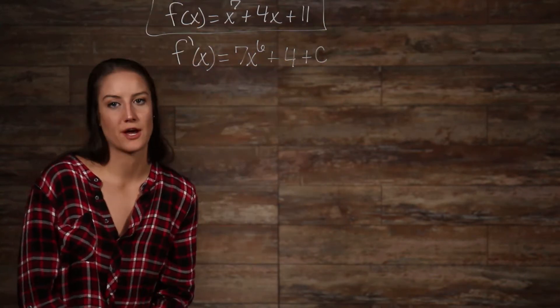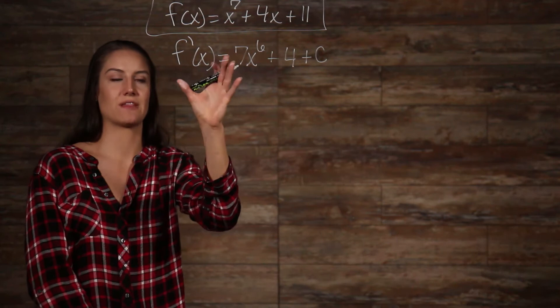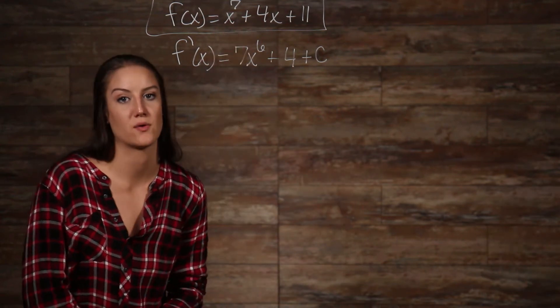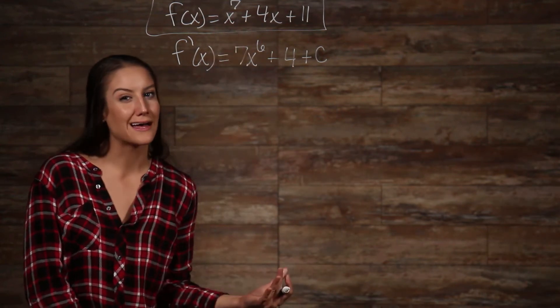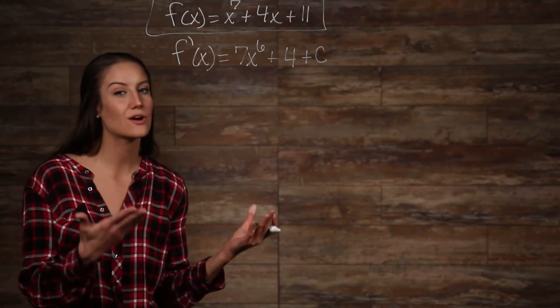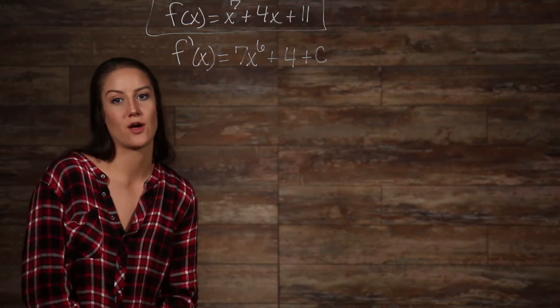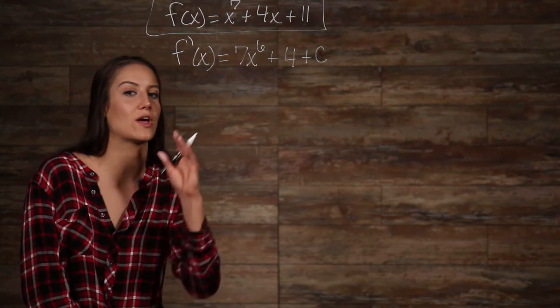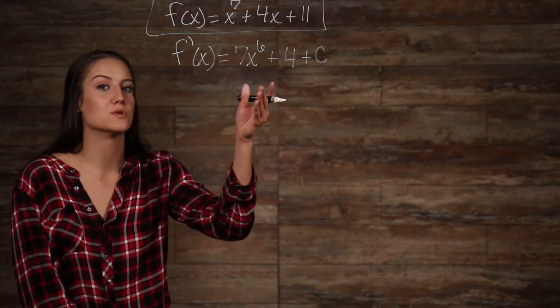Let's work with what we know. We know that when this function was differentiated, that one was subtracted from the exponent. So, math and logic tell us that if we add one to the exponent, then we should get the original exponent we started with. What else do we know? Well, we know that whatever the original exponent was, was brought down.